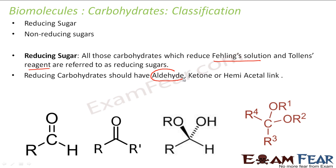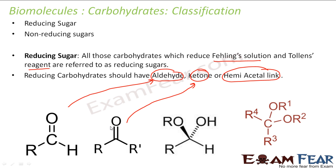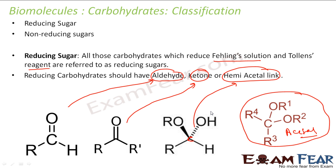Please note: reducing carbohydrates should have aldehydes, ketones, or hemiacetal linkage. If it has either of these, it will be a reducing sugar. For example, aldehyde is RCHO, ketone is ROR', and hemiacetal is where you have OH, carbon, OH, OR, R, and H. All three of these will be reducing sugars. The acetal form — with two different R's and two different OR's — will not reduce Fehling's solution or Tollens' reagent, so it will be a non-reducing sugar.